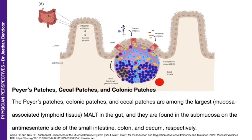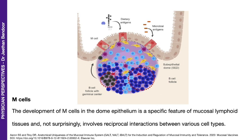These are Peyer's patches — a lot more organized when compared to the previous two. Peyer's patches are the largest of the gut-associated or mucosa-associated lymphoid tissue, and they're found in the small intestine, colon, and the cecum. An important cell in these patches is something called an M-cell, which is very important for presenting the antigens that come from the gut.